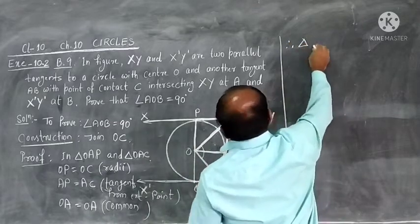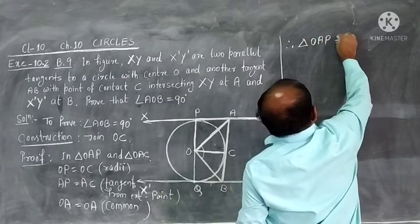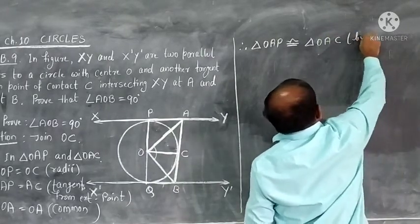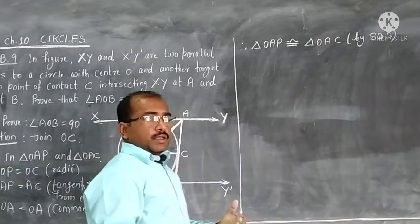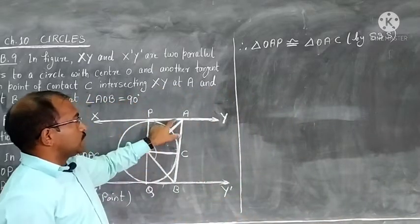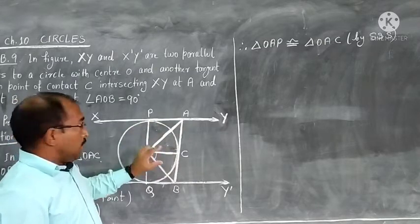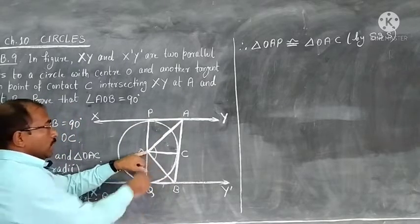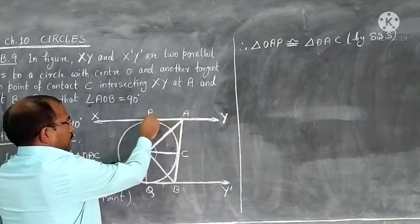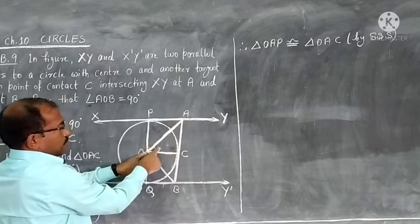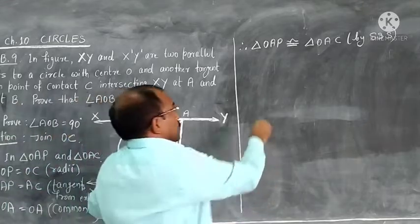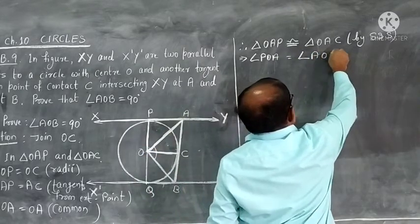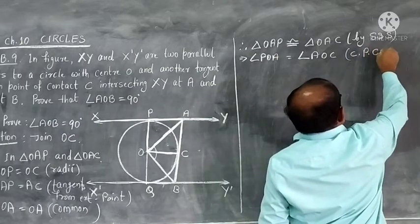Therefore, triangle OAP is congruent to triangle OAC by SSS congruence condition. When triangles are congruent, corresponding parts are also equal. So angle POA equals angle AOC — corresponding parts of congruent triangles are equal. This is equation 1.